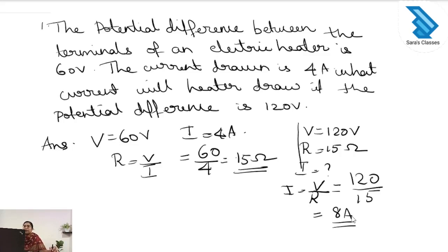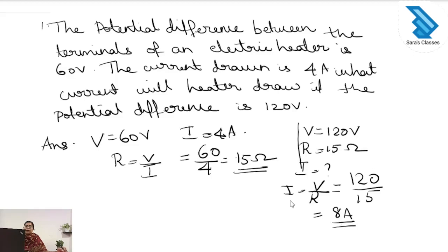To summarize: the potential difference was 60 volt and current was 4 ampere, so R = V/I gives resistance as 15 ohm. When voltage is increased to 120 volt, using I = V/R with resistance 15 ohm, the current is 8 ampere.